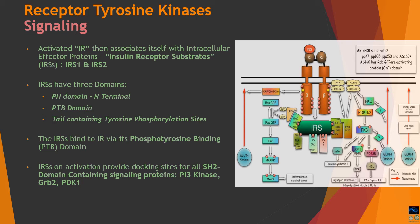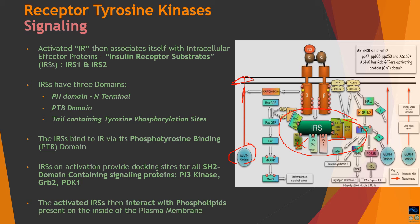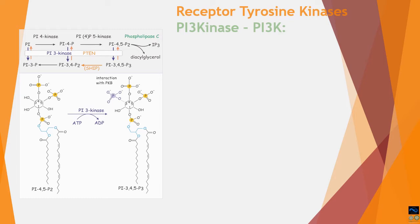When activated, IRS relays the signal to numerous downstream proteins, causing divergence into different pathways. Insulin causes diversification of signaling, controlling not only metabolism but also vesicle secretion. Two important effects are seen: one is the metabolic effect, and the other is fusion of GLUT4 vesicles to the target cell membrane to allow increased glucose transport into the cell. Activated IRS interacts with phospholipids via PDK, and PI3 kinase is one of the key effectors of this RTK signaling.